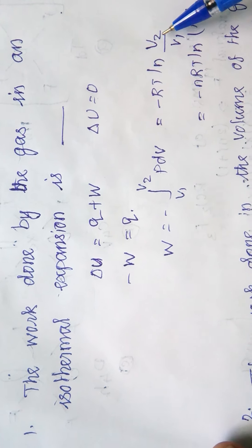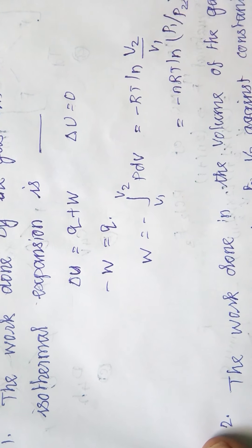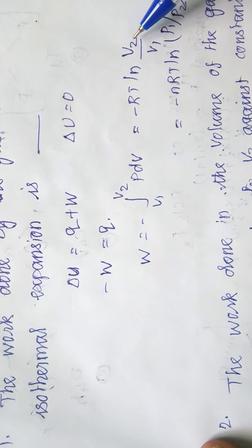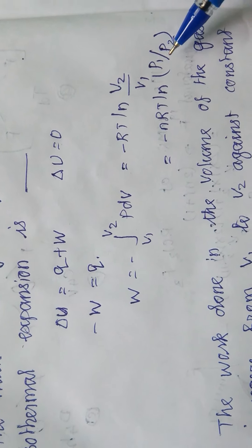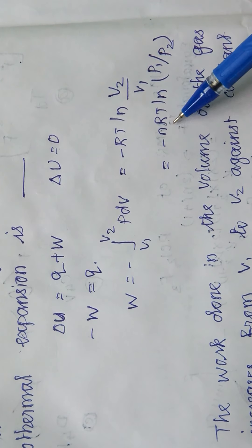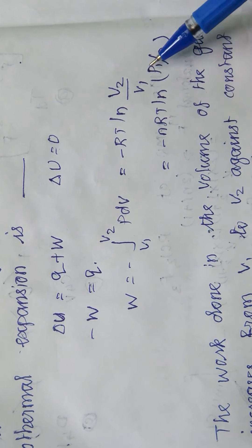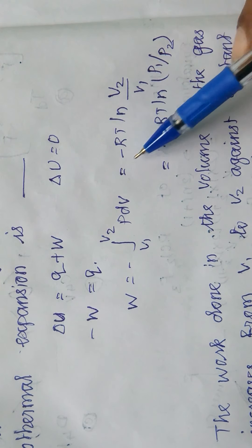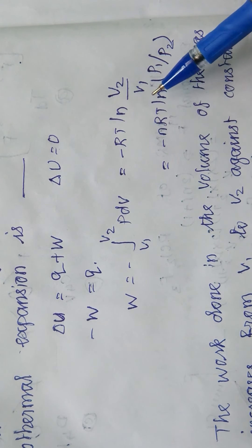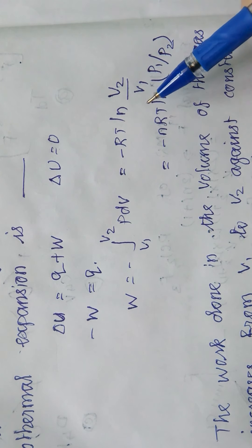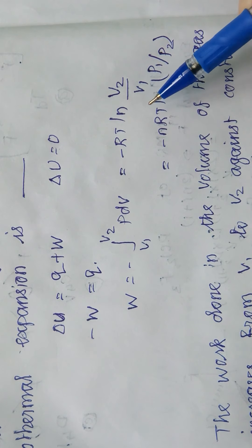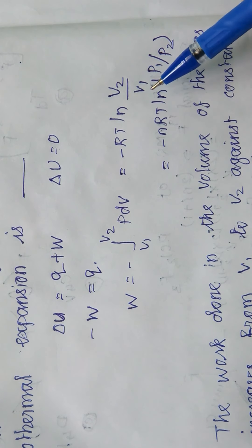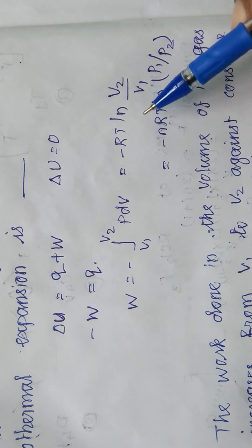The next equation: when you rearrange using pressure instead of volume, you get W = -RT ln(P1/P2). This equation is very important; based on these equations we can expect some calculations for the exams.